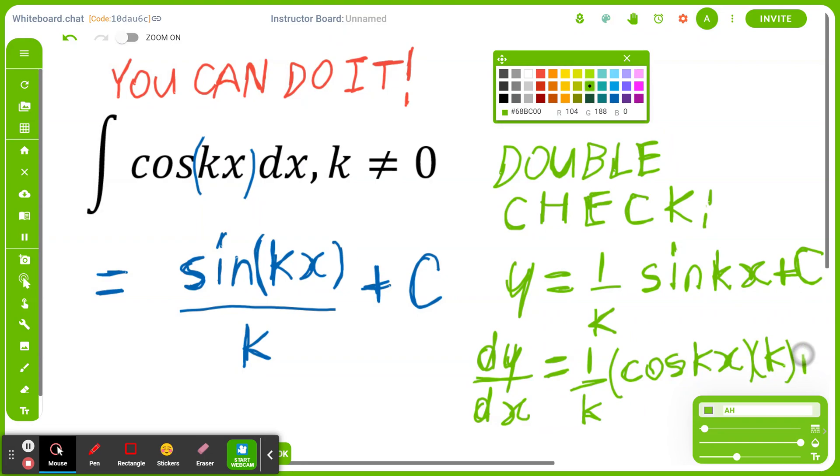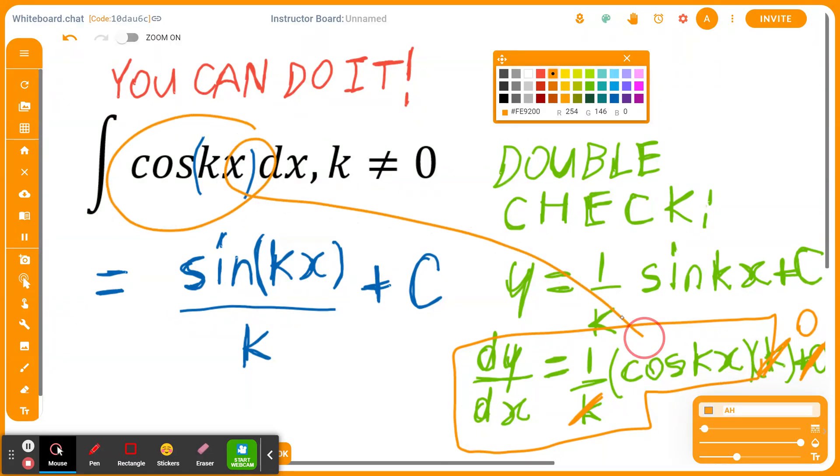Of course, when you find the derivative of a constant, that's zero. And look what happens when you clean this up: k divided by k is 1, and the derivative of the constant is zero. You're left with exactly cos(kx), which is what we started with. I hope this makes sense.